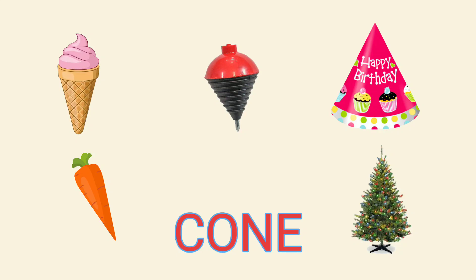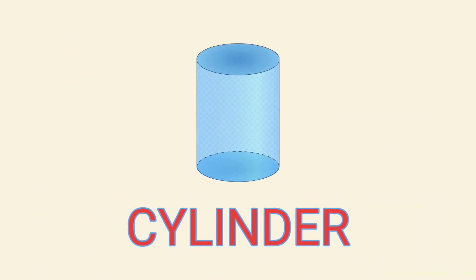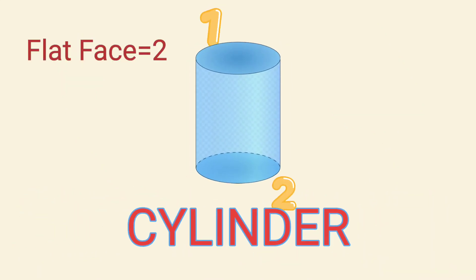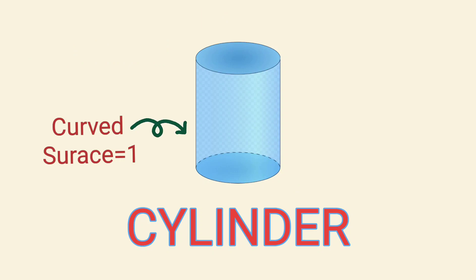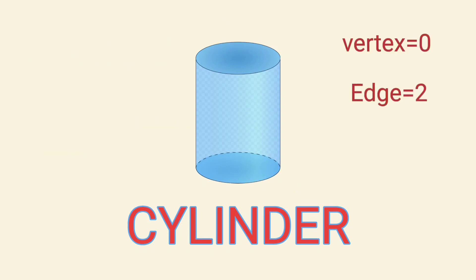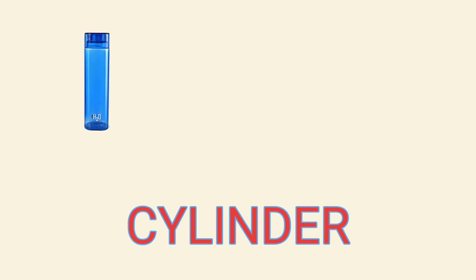More cone examples include birthday caps, carrots, and Christmas trees. Cylinder: A cylinder has two flat faces, one curved face, zero vertices, and two edges.